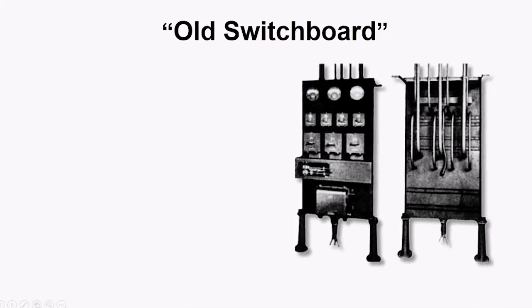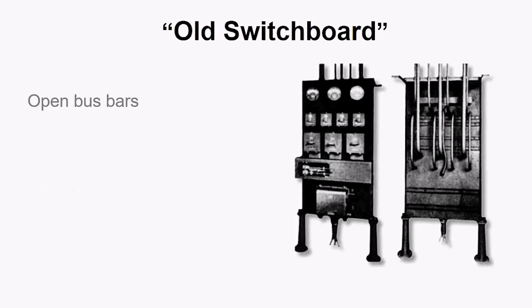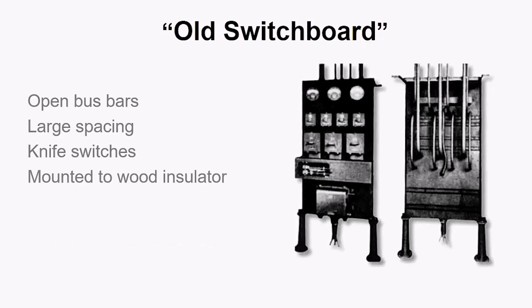The evolution of the switchboard goes all the way back to the late 1800s, when the old switchboards were made up of open bus bars, open knife blades, and large spacings, because the bus bars had no insulation on them. In other words, there was no such thing as wire in the very early days. The knife switches were used to turn on and off the power. All of these were mounted to a wooden board, which was later replaced by some type of stone or marble granite. And because it was all open, it was placed in a dedicated room or a fence was put around the switchboard for safety.